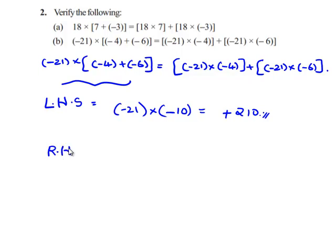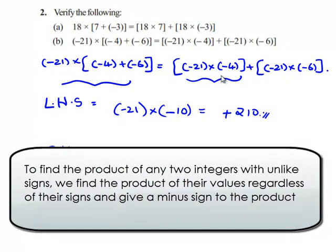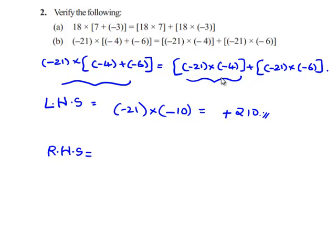Now we solve the values on the right hand side: negative 21 times negative 4, plus negative 21 times negative 6. First we solve the values lying under the square bracket, that is negative 21 times negative 4.